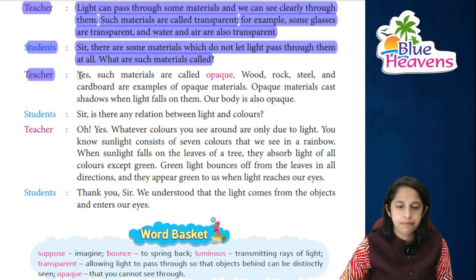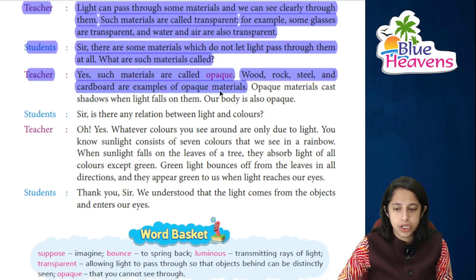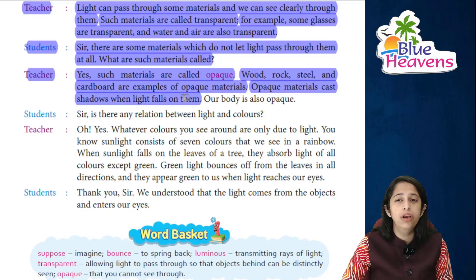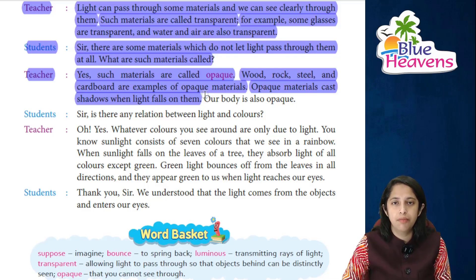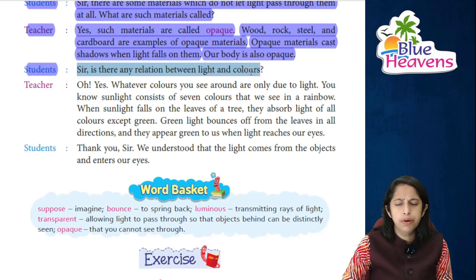The teacher confirms: yes, such materials are called opaque. Wood, rock, steel, and cardboard are examples of opaque objects — light cannot pass through them. Opaque objects cast shadows when light falls on them — they only provide shadow. That is why washrooms in five-star hotels are made of opaque glass. Our own body is also opaque.